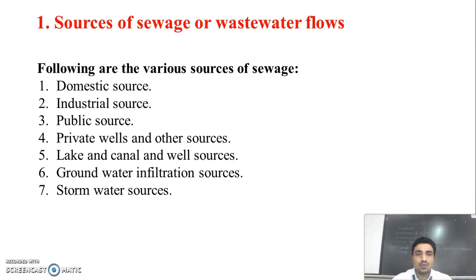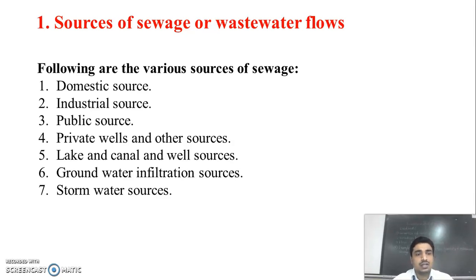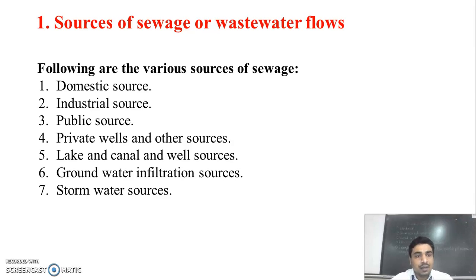The quantity of wastewater generated from different industries is different, depending on the type of industry and what kind of raw material is utilized. So depending on those factors, the generation of wastewater varies in the industrial source. Then the public source — the wastewater generated from activities like gardening or cleaning roads will come under this public source. For private wells and other sources, people having their own bore wells or private wells — whatever wastewater is generated from those will come under this private wells source.